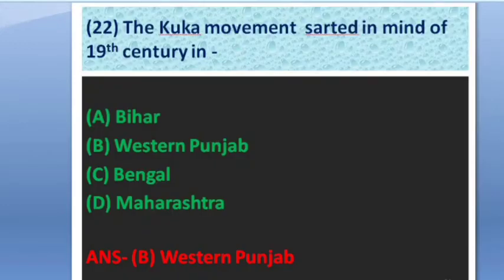Next question: The Kuka movement started in the middle of the 19th century in which region? Options: Bihar, Western Punjab, Bengal. The answer is option B — Western Punjab.